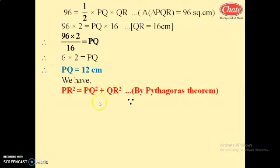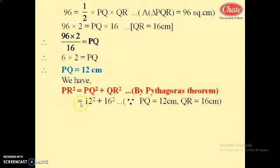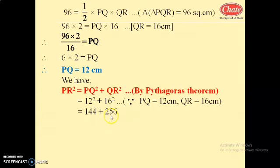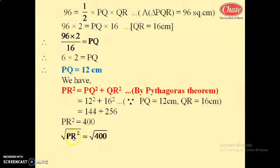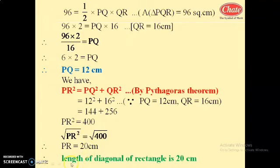By the Pythagorean theorem, PR squared equals PQ squared plus QR squared, so PR squared equals 12 squared plus 16 squared. 12 squared is 144 and 16 squared is 256. Therefore PR squared equals 400. Square root of 400 is 20 centimeters. So the length of the diagonal of the rectangle is 20 centimeters.